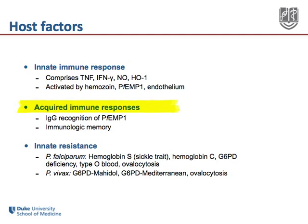Acquired immune responses are also a characteristic feature of highly malaria endemic areas. In plasmodium falciparum, acquired immune responses consist largely of IgG recognition of PFEMP1 domains, and the recognition of more domains is thought to limit the severity of infection. There are also emerging data suggesting that plasmodium falciparum specifically can mediate the acquisition of immunologic memory to tune immune responses to either attenuate or increase the severity of infection.